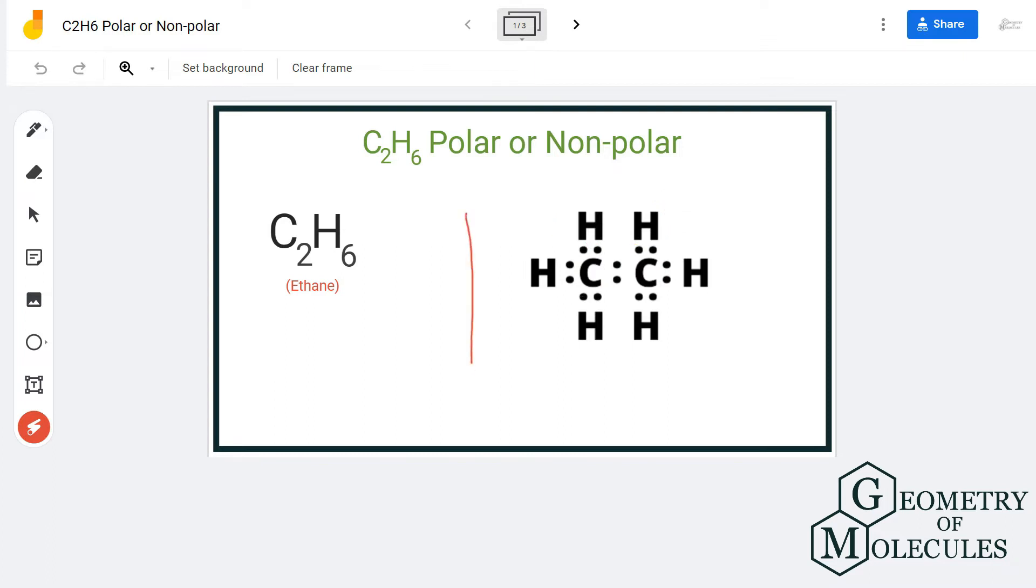So here is the Lewis structure for C2H6, in which two carbon atoms are sharing their valence electrons with three hydrogen atoms each, as well as sharing their valence electrons with each other.